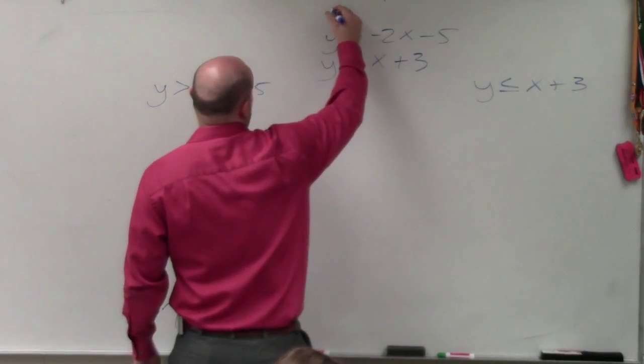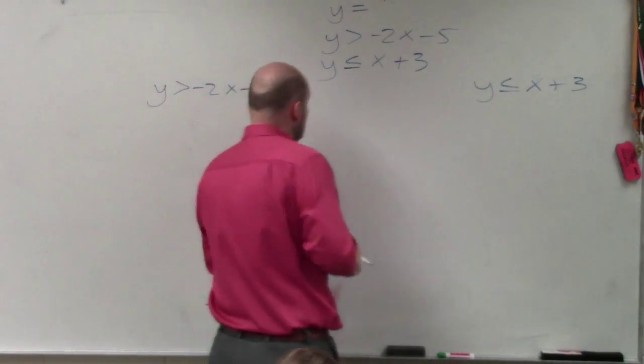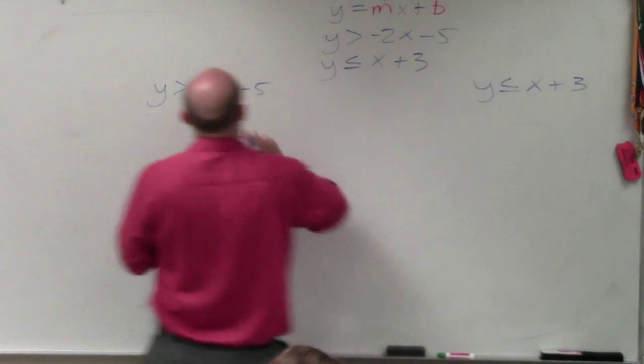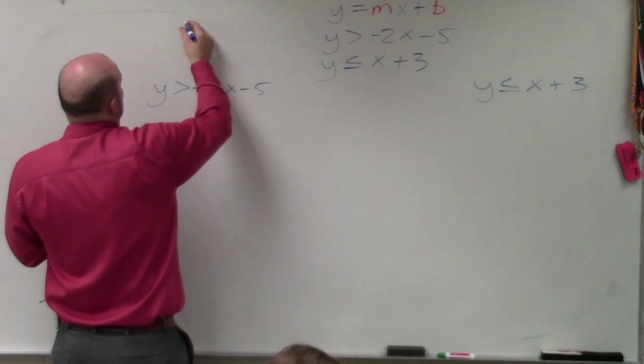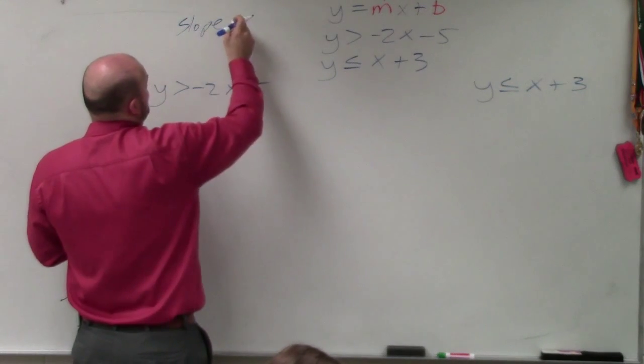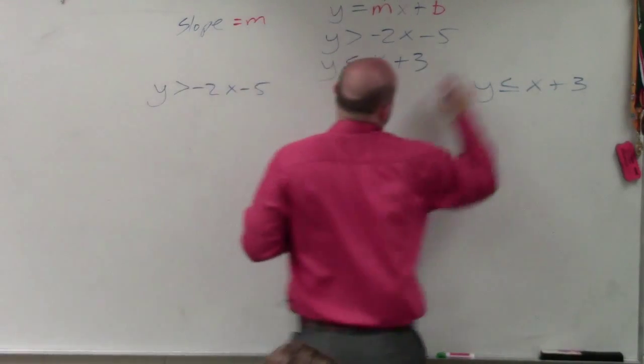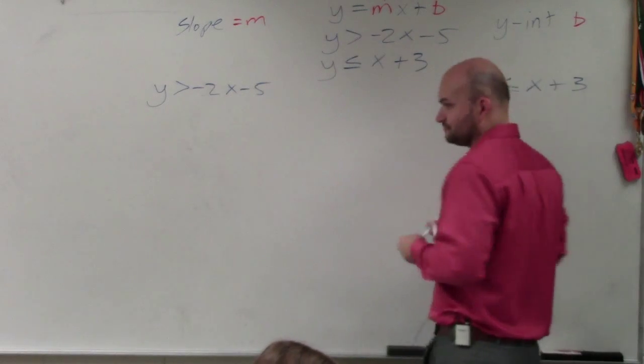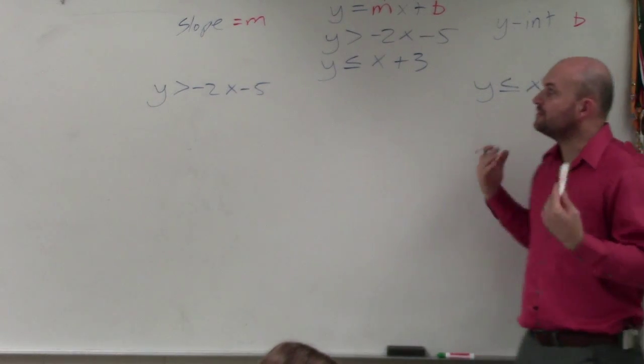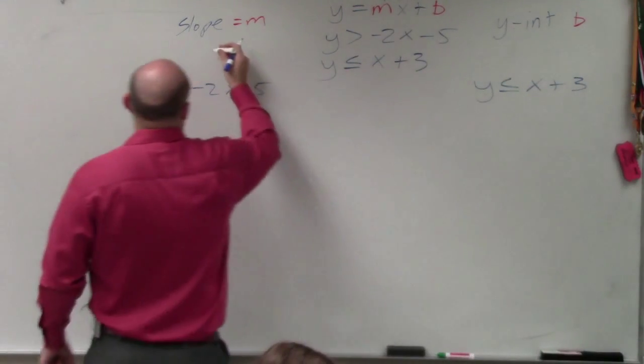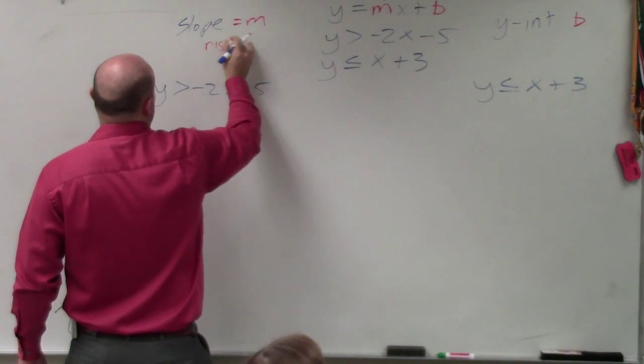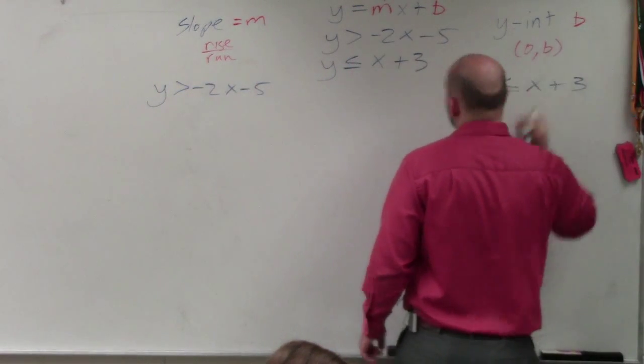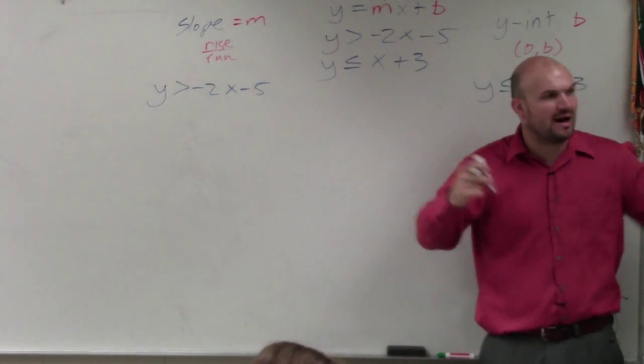Remember, slope and y intercept come from the equation y equals mx plus b, where your slope is the value of m, and your y intercept is your value of b. The way that I like to write them is I always like to have slope as a ratio or a fraction, rise over run. And I always like my y intercept to be written as a coordinate point, because that tells me I need to plot the y intercept.